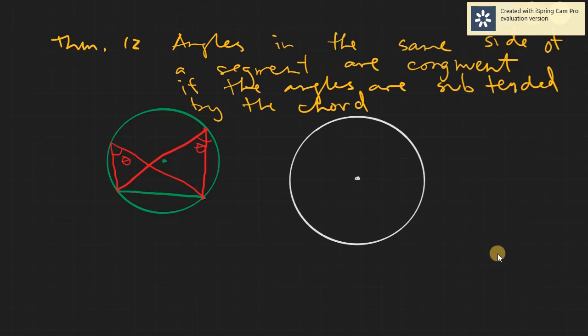Okay, Assalamualaikum warahmatullahi wabarakatuh. Today we will be discussing theorem number 12, being angles in the same side of a segment are congruent if the angles are subtended by the chord.